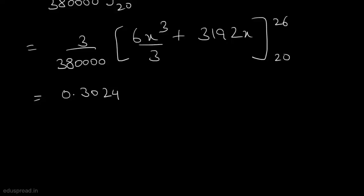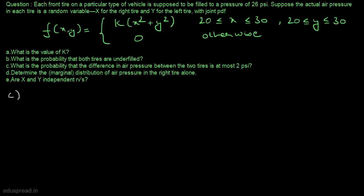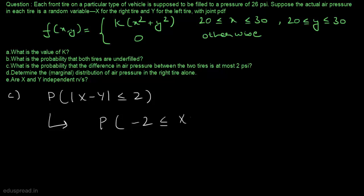Let's move to part C. We have to find the probability that the difference in air pressure between the two tyres is at most 2 PSI. That means we need P(|X − Y| ≤ 2), which is equivalent to finding P(−2 ≤ X − Y ≤ 2). Let's first visualize the region for which we have to find the probability.